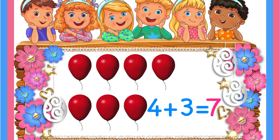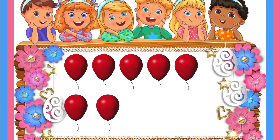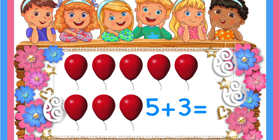Let's go to the next one. One, two, three, four, five balloons and your dad gives you another three balloons. So here the addition you are going to do is five plus three, which means you have five balloons and you are going to add another three. Let's count how many total balloons there are with you: one, two, three, four, five, six, seven, eight. So the answer is eight.